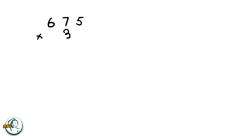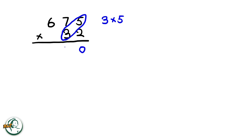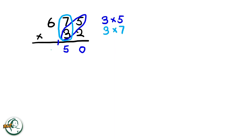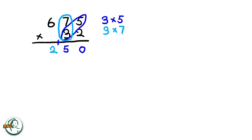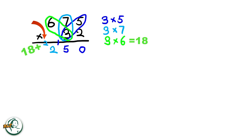Let's do another example: 675 times 32. Firstly, we start by writing down a 0. We multiply 3 by 5, giving us 15. We write down the 5 and carry over the 1. Next, we multiply 3 by 7, resulting in 21. Adding the carried over 1 to 21, we get 22. We write down the 2 and carry over the 2. 3 multiplied by 6 is 18, and adding the carried over 2 to 18, we get 20.